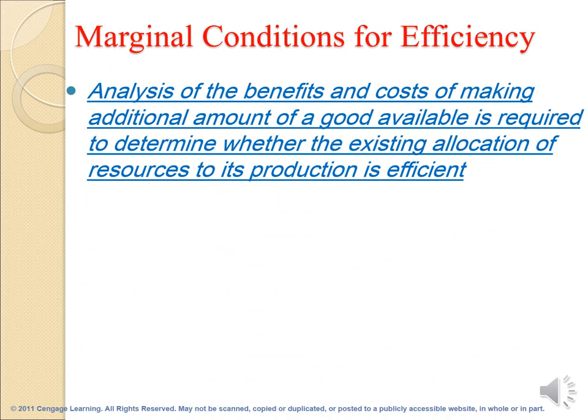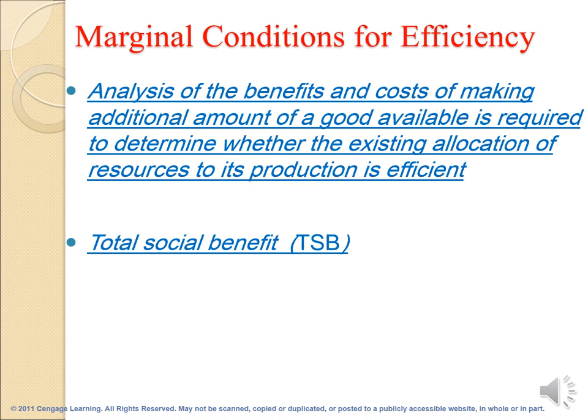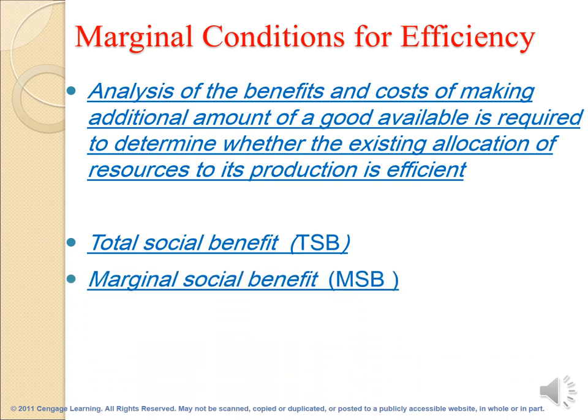The marginal conditions for efficiency involve analysis of the benefits and costs of making an additional unit of a good available, to determine whether the existing allocation of resources to its production is efficient. We use the total social benefit (TSB) and marginal social benefit (MSB). TSB is the satisfaction provided by a given quantity of an economic good in a certain period. MSB is the extra benefit of making one more unit available, calculated as delta TSB divided by delta Q.